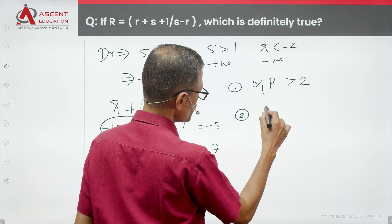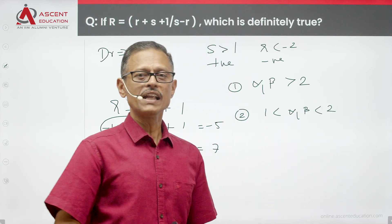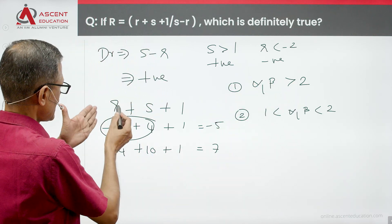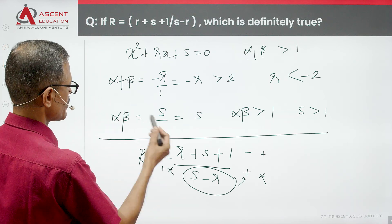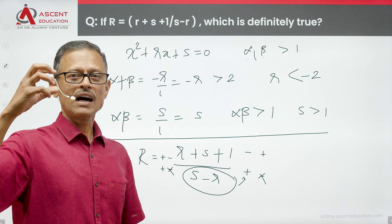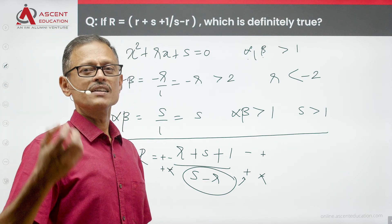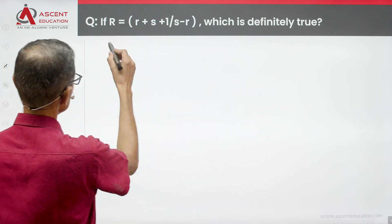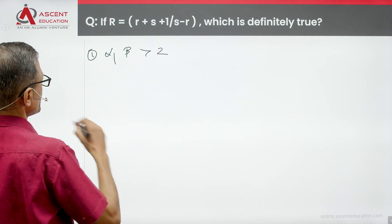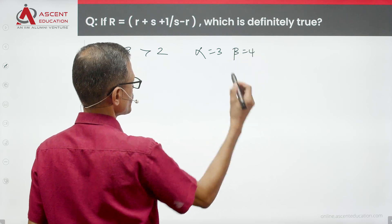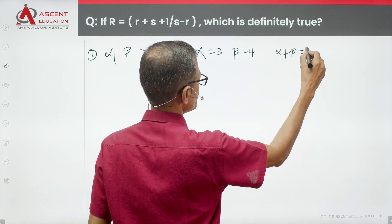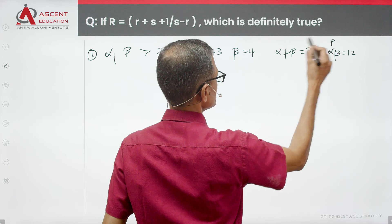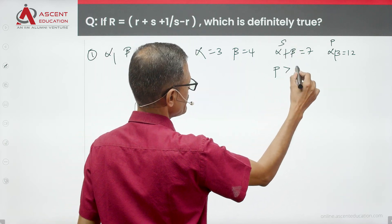For the numerator, we consider two cases for alpha and beta. First, let alpha and beta both be greater than 2. R relates to the sum: alpha + beta = -r. S relates to the product: alpha × beta = s. For example, alpha = 3, beta = 4: sum = 7, product = 12. When both roots are greater than 2, the product will be greater than the sum.